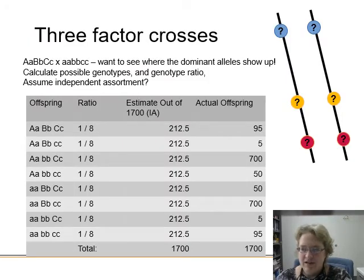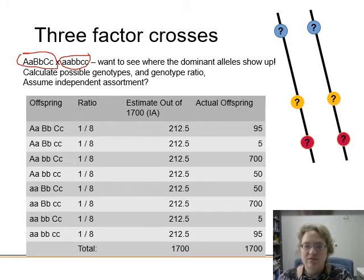So we're going to take things up a notch and do a three-factor cross. We've got three genes on the same chromosome. And we're going to do the same thing we did with the two-factor cross, where we have the heterozygote. We've got our heterozygote, and we've got our homozygous recessive. We're going to breed that. We want to see where those dominant alleles show up. We want to calculate the possible genotypes, the genotype ratio, and if we did a chi-square, we could assume independent assortment, and then we could compare and see that it is not the case. So in this case, here's our offspring. We predicted an independent assortment ratio of it being equal. Our estimate out of 1,700-ish offspring was that there'd be about 212 of each, and that just so did not happen.